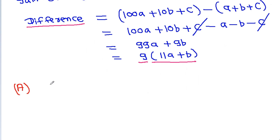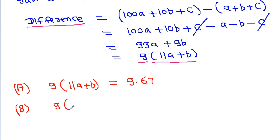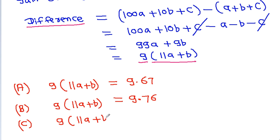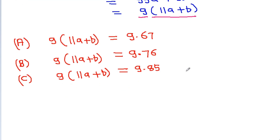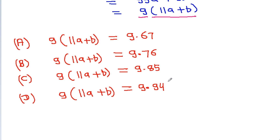For option A, we get 9 times (11a plus b) equal to 9 times 67. For option B, we get 9 times 76. For option C, we get 9 times 85. For option D, we get 9 times 94.